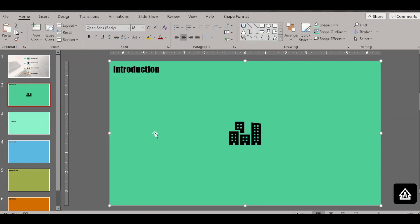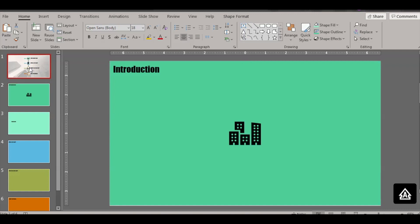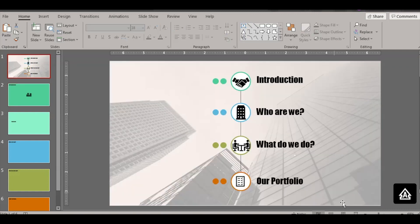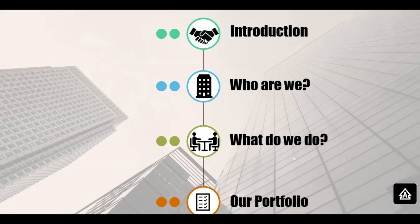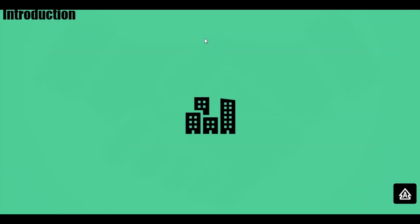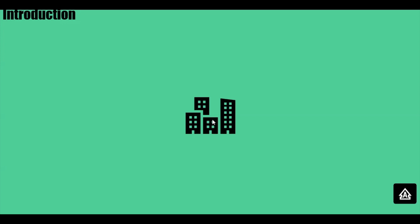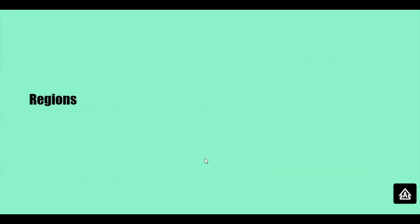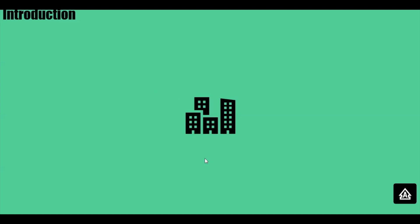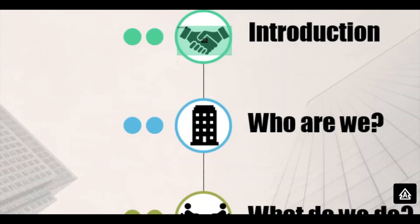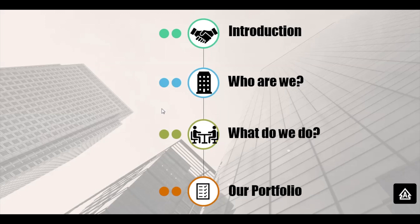Let's see how the second level works. Go to the main slide and click Show. Click Introduction — it zooms into the introduction slide. You'll see another icon; click it and it zooms into the region slide. That's the second level of zoom. Click again to go back to introduction, click again to return to the main slide. Thanks for watching — please subscribe, like, and share. Put any questions in the comments. Bye!